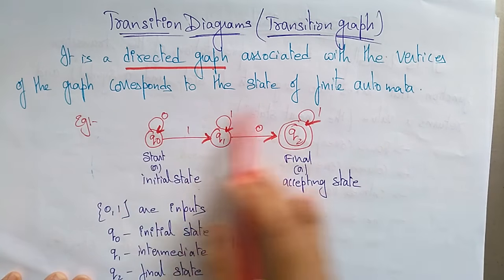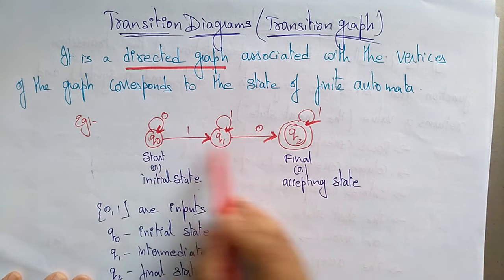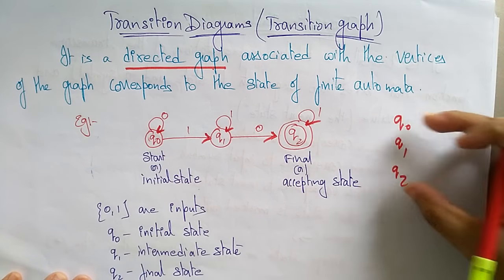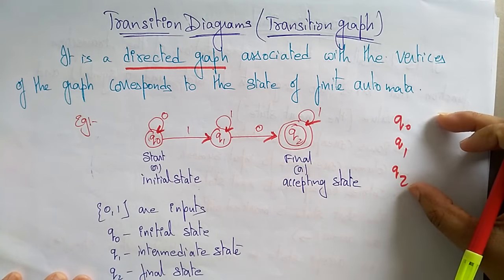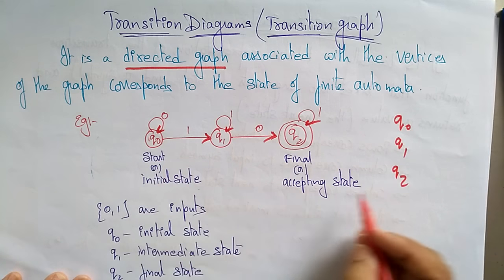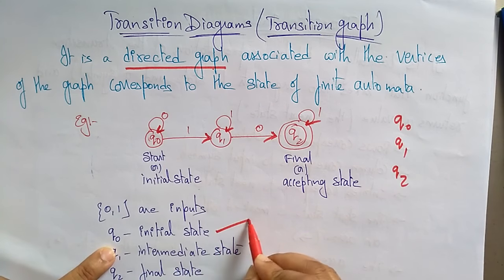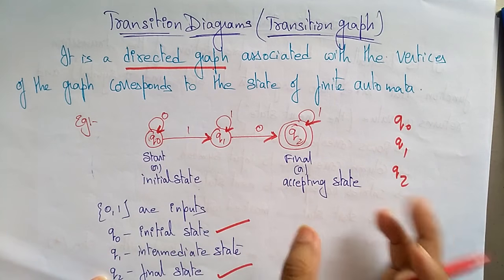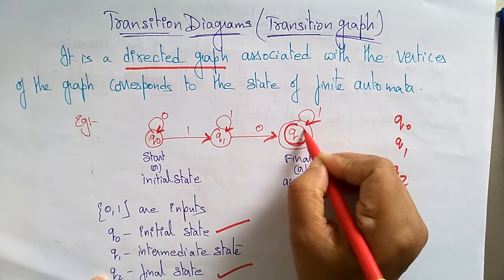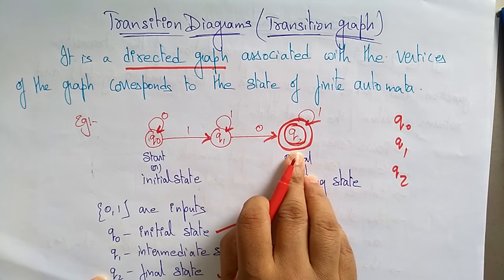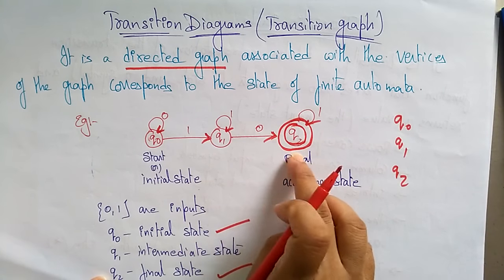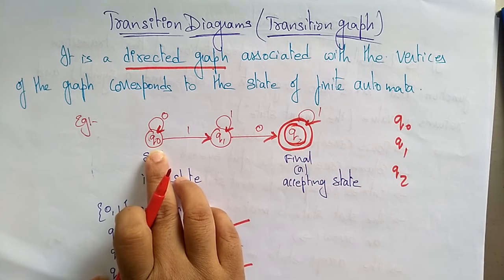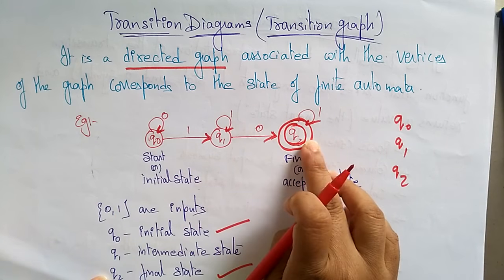Let's take a finite automata with three states: q naught, q1, and q2. The starting state is q naught, which is the initial state, and q2 is the final state. Whenever a final state is present, you represent it with two circles — that indicates the final state, also called an accepting state.